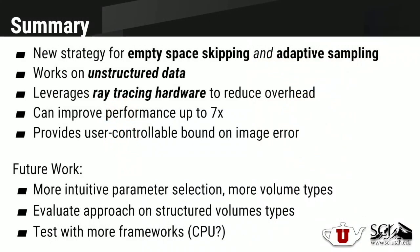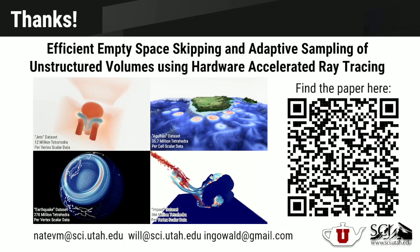To summarize, we present a new strategy for empty space skipping and adaptive sampling that works on unstructured data and leverages ray tracing hardware to reduce overhead. On our datasets we see up to a 7x performance improvement. For future work, we'd like to make parameter selection easier, test on more types of datasets and additional frameworks — and while we're currently using OptiX, we may also explore CPU libraries.